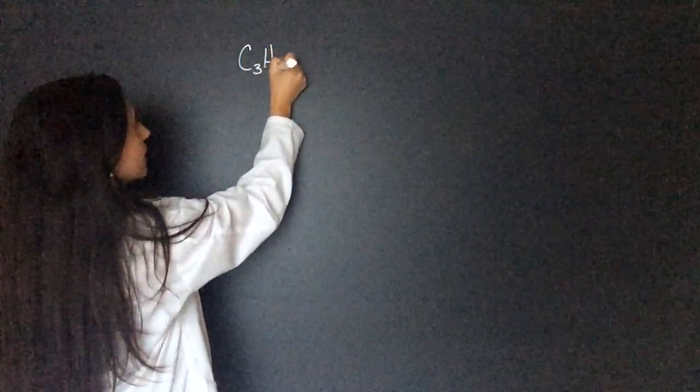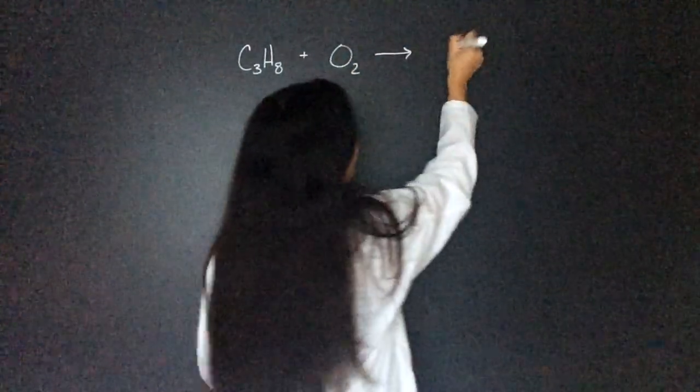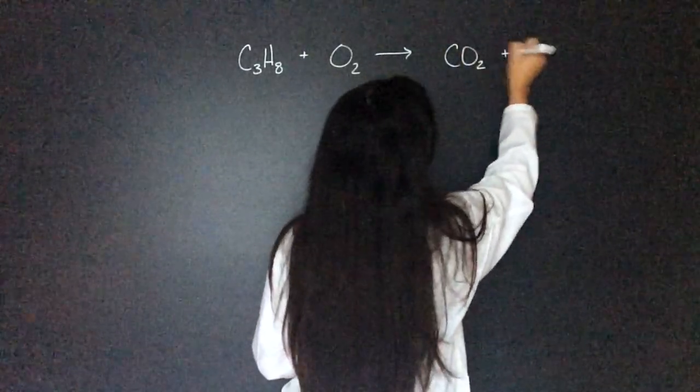So we're going to write out the equation, which they told us in word form, but let's write it as a chemical equation. So we had propane, which is C3H8, plus excess oxygen giving us carbon dioxide and water.